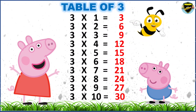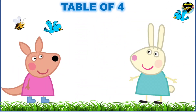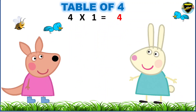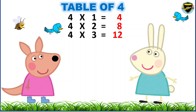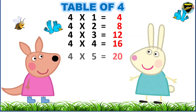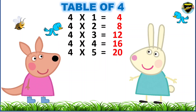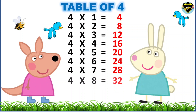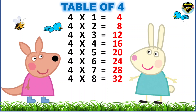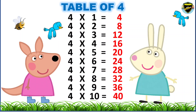Now, let's learn the table of four. Four ones are four. Four twos are eight. Four threes are twelve. Four fours are sixteen. Four fives are twenty. Four sixes are twenty-four. Four sevens are twenty-eight. Four eights are thirty-two. Four nines are thirty-six. Four tens are forty.